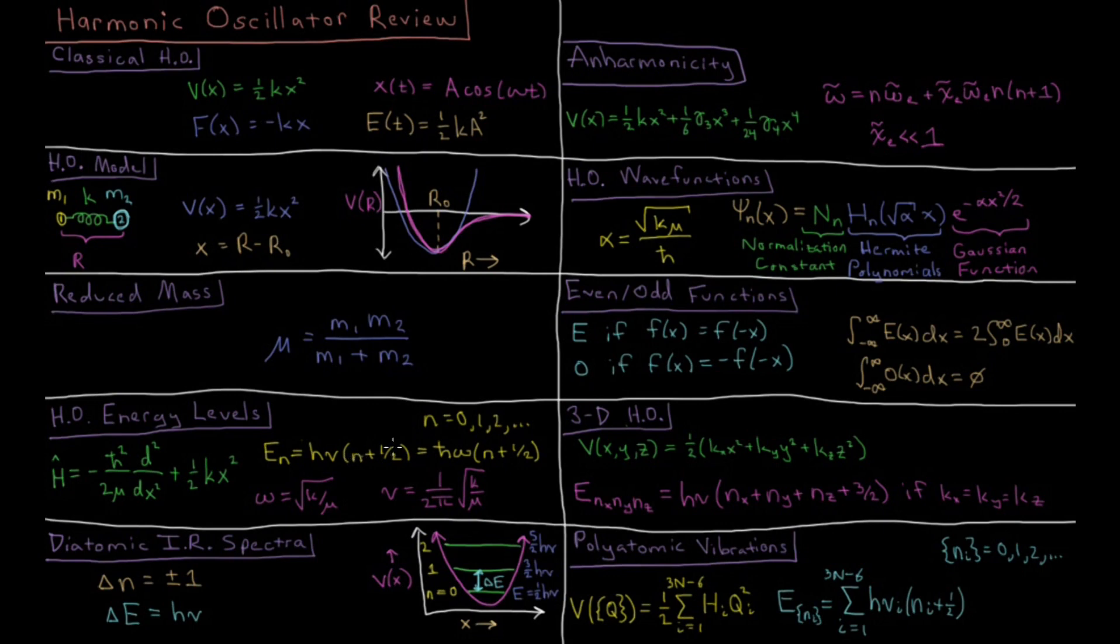So it's E equals h nu times n plus one half, and this is also equivalent to h bar times omega, the angular frequency, times n plus one half. Each of these is the same within a factor of two pi.